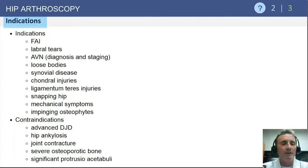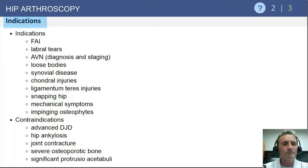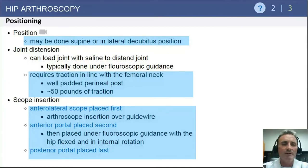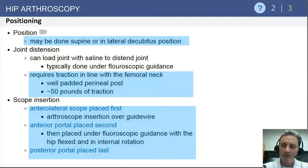We'll review hip arthroscopy. These are the indications for hip arthroscopy, which you should be familiar with, as well as the contraindications. Hip arthroscopy can be performed in both the supine and the lateral decubitus positions. Traction is necessary to provide adequate access to the joint, and there are different arthroscopic portals that you should be familiar with and have been the source of various study guide questions.